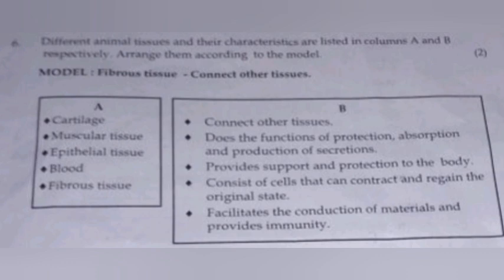Different animal tissues and their characteristics are listed in columns A and B respectively. Arrange them according to the model. Answer: Cartilage provides support and protection to the body. Muscular tissue consists of cells that can contract and regain the original state. Epithelial tissue performs the function of protection, absorption, and production of secretions. Blood facilitates conduction of materials and provides immunity. Fibrous tissue connects other tissues.